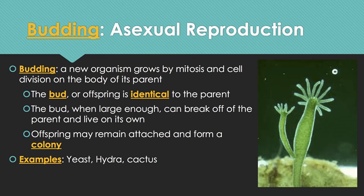Budding is another type of asexual reproduction, where a new organism grows by mitosis and cell division on the body of its parent. The parent is the larger hydra, and the smaller one growing off it is the bud — genetically identical to the parent. When the bud is large enough it can break off and live on its own, though sometimes it remains attached and they form a colony. Examples include yeast, hydra, and some cactus species.